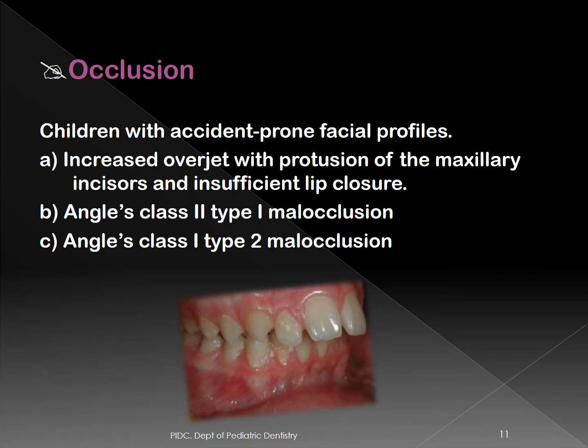Malocclusion is also a predisposing cause of traumatic injuries. Children with increased overjet, protrusion of maxillary incisors, and insufficient lip closure — classified as Angle's Class II division 1 or Angle's Class I division 2 malocclusion — are prone to injuries.